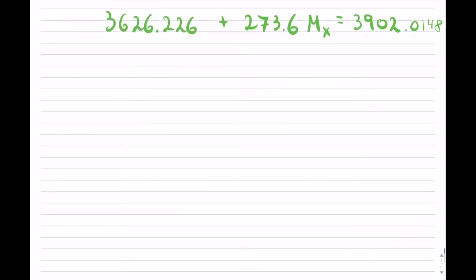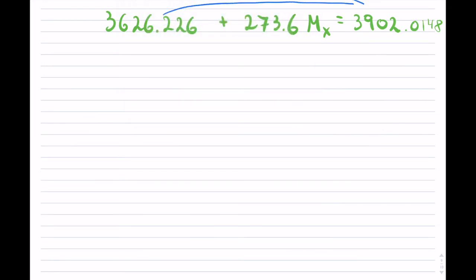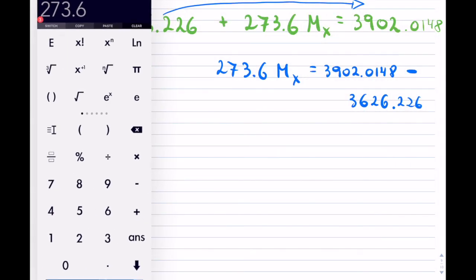What do I do now? Well, I want to be able to solve this for Mₓ. So I will shift this over to the opposite side. And we're going to get 273.6Mₓ equals—now I have 3902.0148 minus 3626.226. So I have 275.7888. So I am almost done.